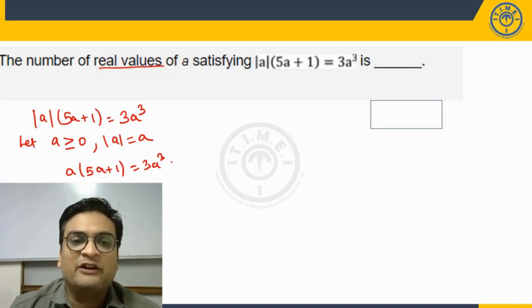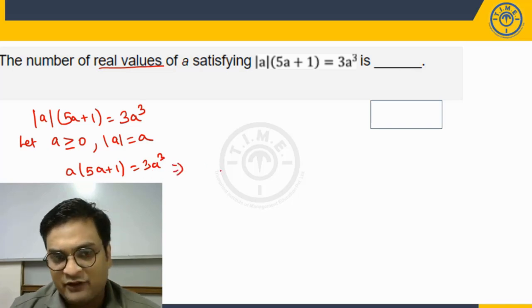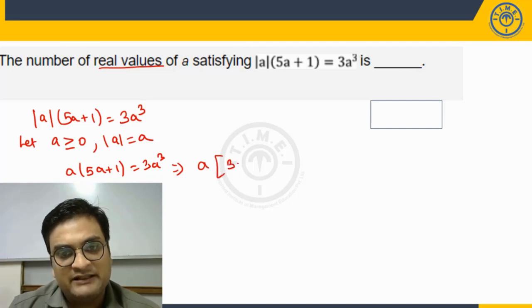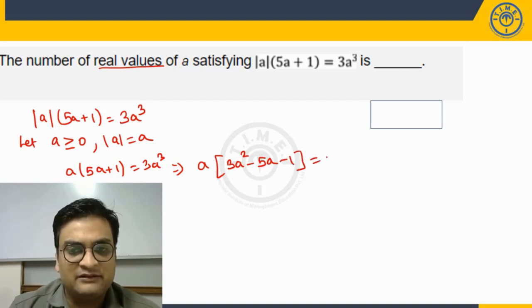Let us bring all terms on one side. So when we bring all terms on one side, I will get a common, 3a square minus 5a minus 1 equals 0.